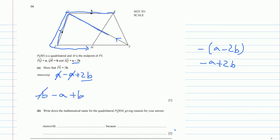So this negative B and positive B will be cancelled. We will be left with A. So it means from R to M is A. So this is A and this is A. It means these two are parallel too. So which means when two opposite sides are parallel, it's a parallelogram.